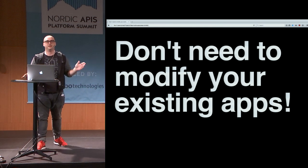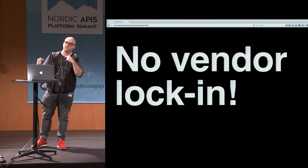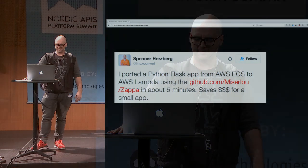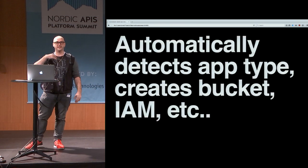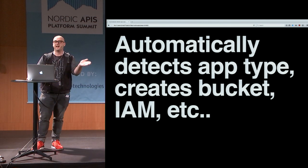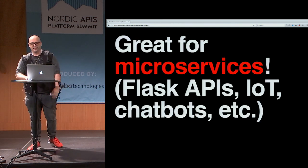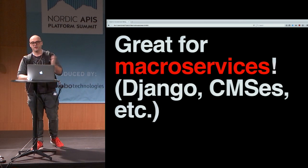The big thing is you don't need to modify your existing applications if you're already using Python. Because it's all based around WSGI, there's no vendor lock-in, which is huge if you're trying to sell this to your companies. You can try it out without having to rewrite the application — if you want to leave and go back to your colo, you can. It works with any WSGI application. It's super easy to start: once you've got Zappa installed, just run Zappa init, which will automatically set up everything, detect your application type, create the host, create permissions, and set up IAM — Amazon's identity and permissions service.